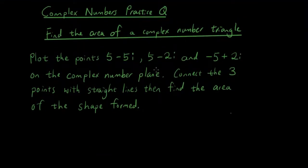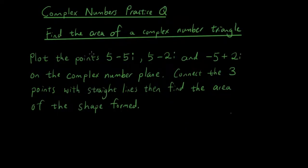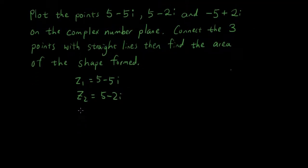z1 is 5-5i, z2 is 5-2i, and z3 is -5+2i. If we do z2-z1, you will get... oh sorry, 5-2i...